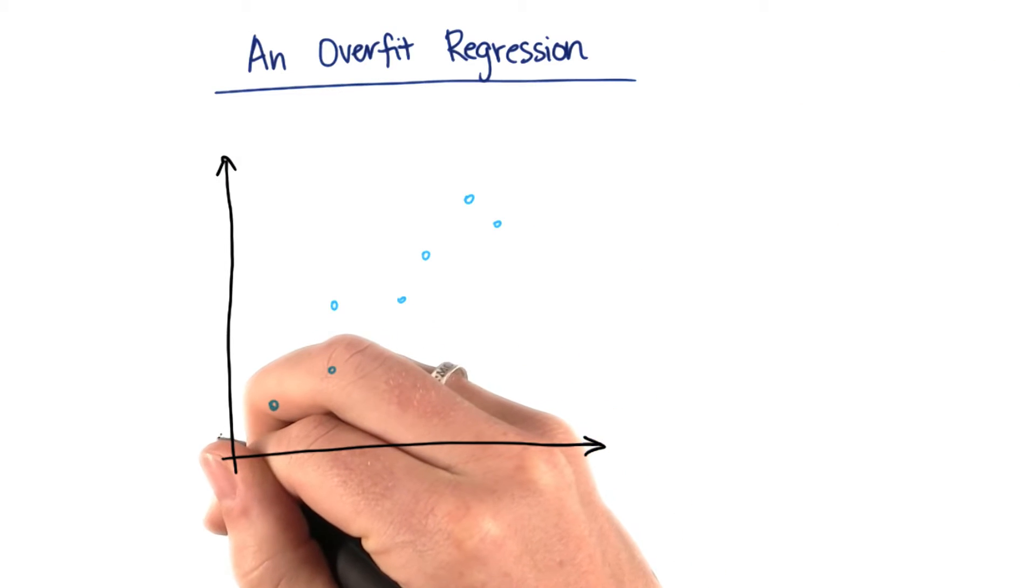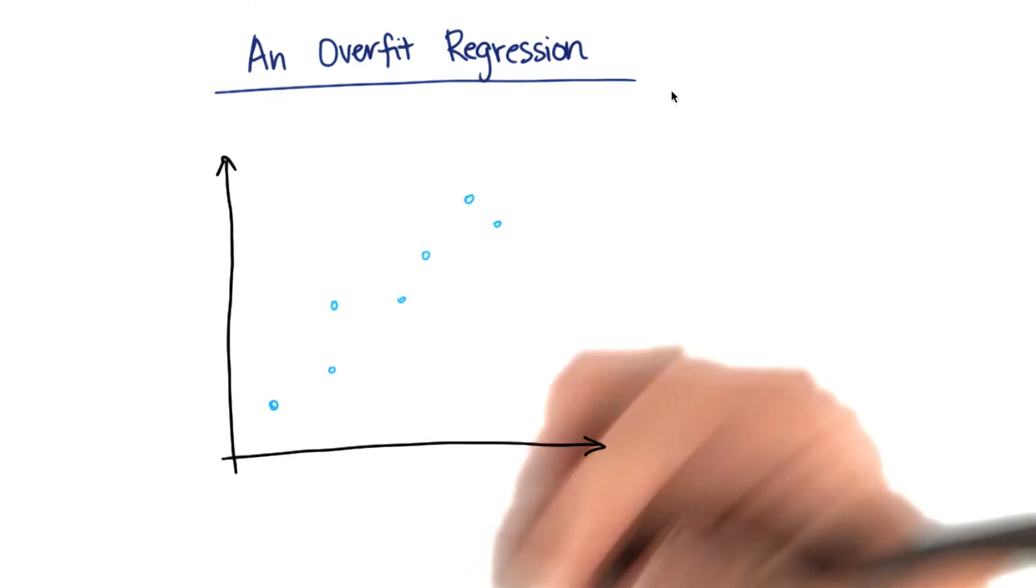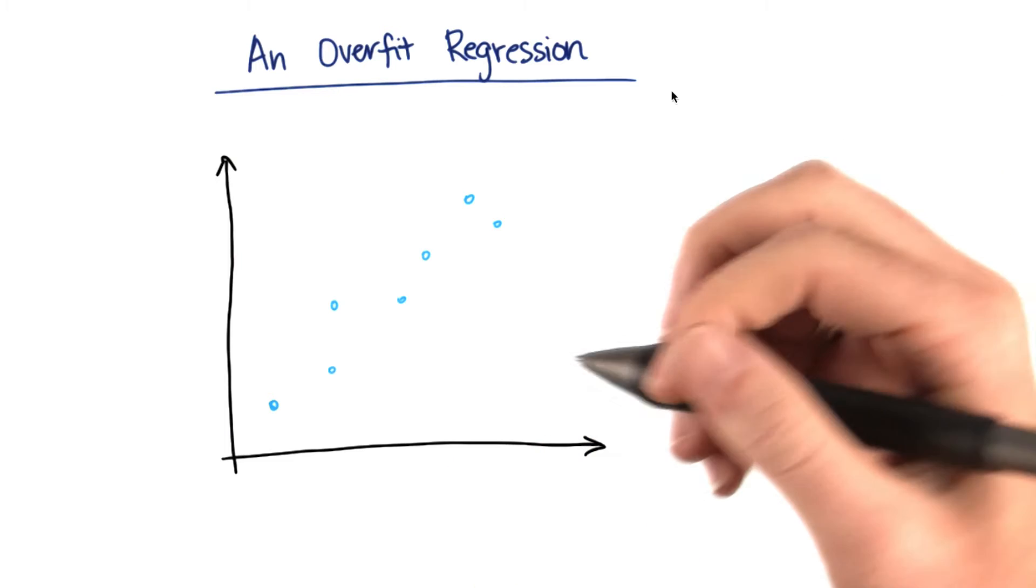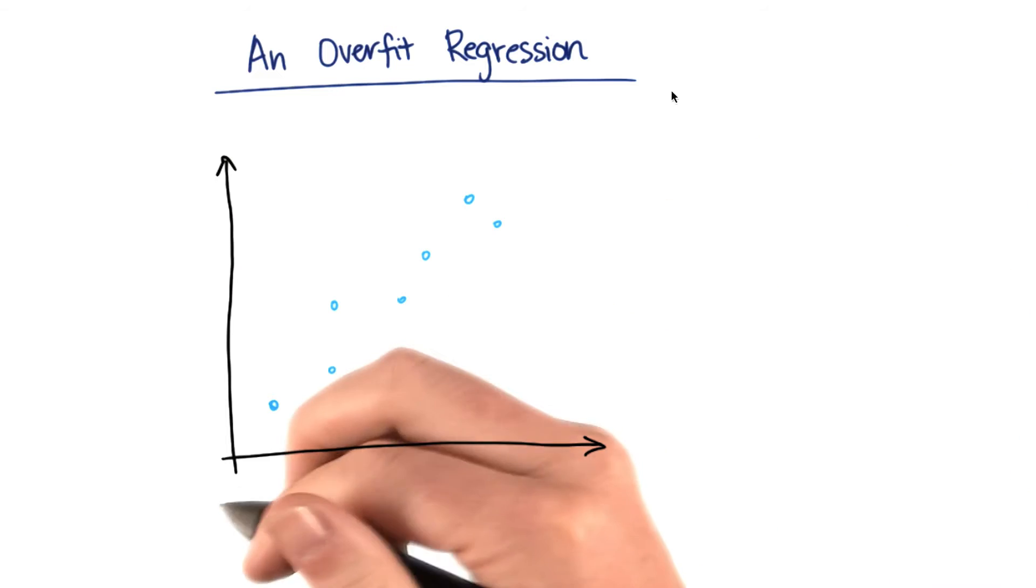My best fit line might look something like this. But let's suppose that because of the model that I'm using and the features that I'm using, I have the possibility also of doing a regression that's a little bit non-linear.